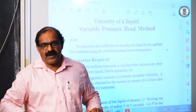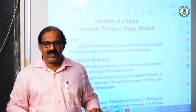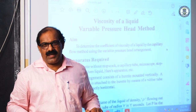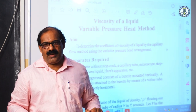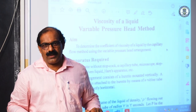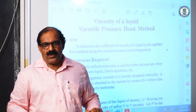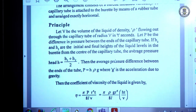Viscosity using the variable pressure head method. Our aim is to determine the viscosity of the given liquid using the variable pressure head method. We are provided with a burette which can be filled and the liquid flows through a given capillary tube. A Hare's apparatus is given to determine the density of the liquid, and using the mercury pellet method we determine the radius of the capillary tube.